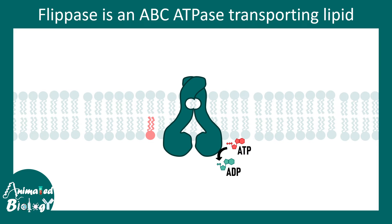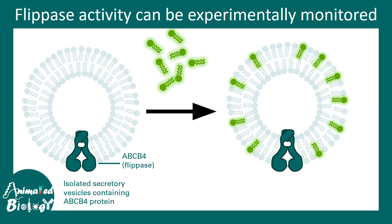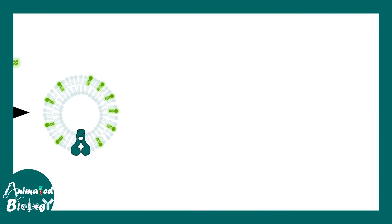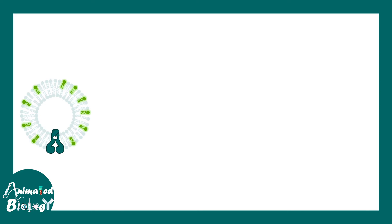How do we understand this function experimentally? Researchers expressed ABC4, which is a flippase molecule, in yeast and isolated secretory vesicles containing the ABC4 protein. In an in vitro situation, they added fluorescently labeled phospholipids, which you can see here. These vesicles now have fluorescently labeled phospholipids on the outer leaflet, since the inner leaflet is inside the vesicle. The idea is that if flippase is working properly, some of these outer membrane labeled lipids would move to the inner membrane.